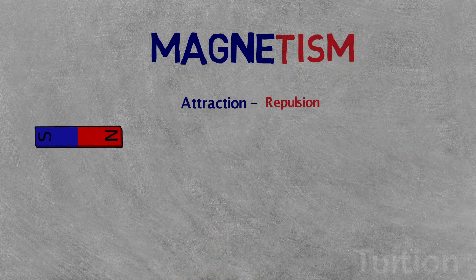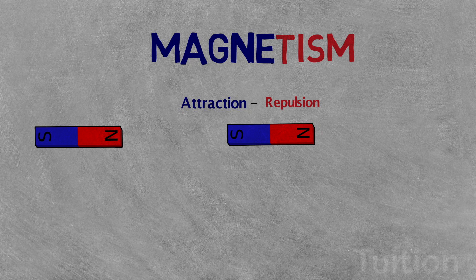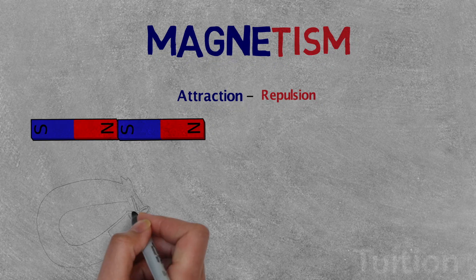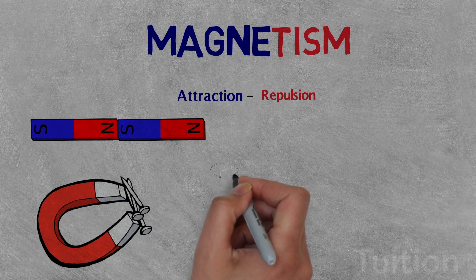Attraction. When two magnets or magnetic objects are close to each other, there is a force that attracts these poles together. Magnets also strongly attract ferromagnetic materials such as iron, nickel and cobalt.